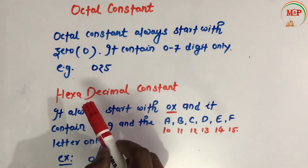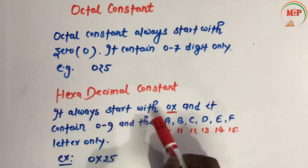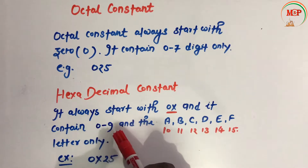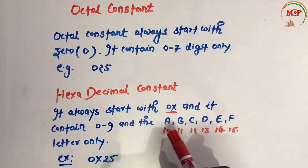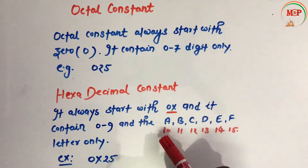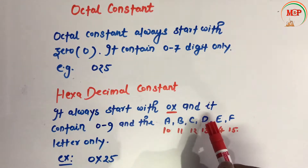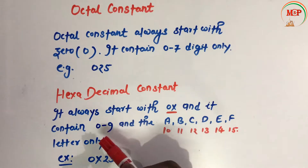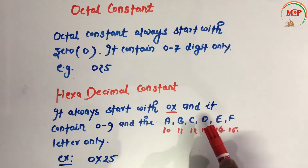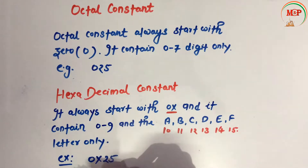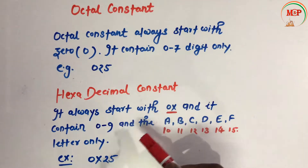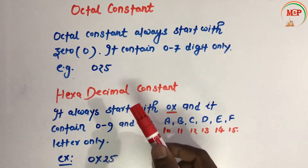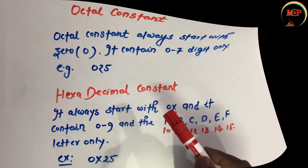The hexadecimal constant always starts with 0x. It contains digits 0 to 9 and letters A to F, where A=10, B=11, C=12, D=13, E=14, F=15. The value must vary between 0–9 and A–F only. For example, 0x25 is a hexadecimal constant.